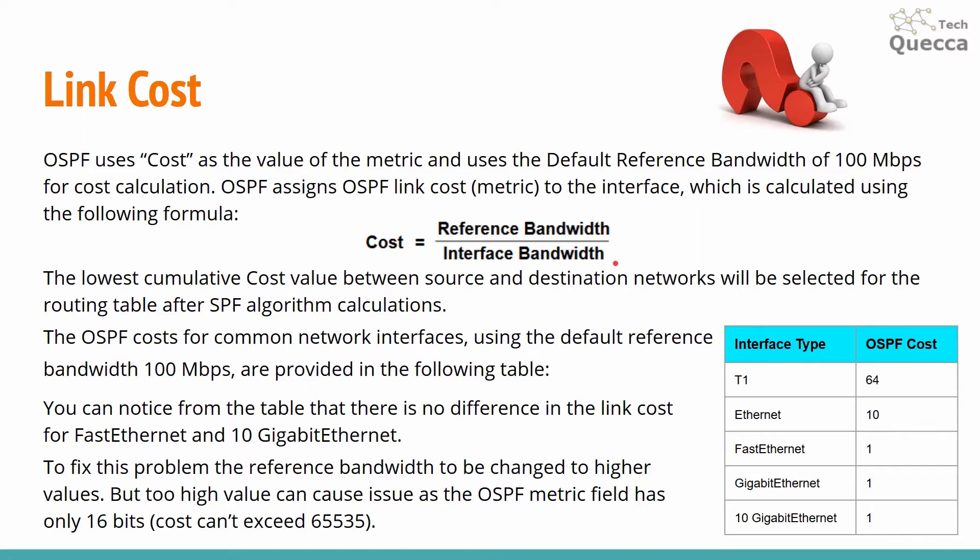The lowest cumulative cost value between source and destination networks will be selected for the routing table after SPF algorithm calculations. The OSPF costs for common network interfaces using the default reference bandwidth of 100 megabits per second are provided in the following table.